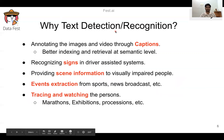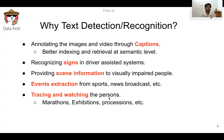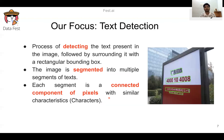Text detection and recognition is used in images and videos for captioning, annotating for better indexing and retrieval at a semantic level. It is also used for recognizing signs in driver-assisted systems and self-driving cars. It also provides scene information to visually impaired people by detecting text and delivering it as voice output. We can also use it for event extraction from sports and news broadcasts, and for tracking persons by their t-shirt numbers in marathons, exhibitions, and processions.